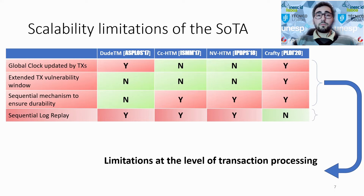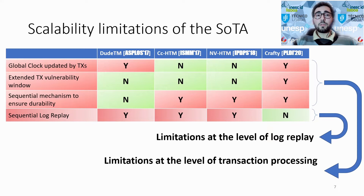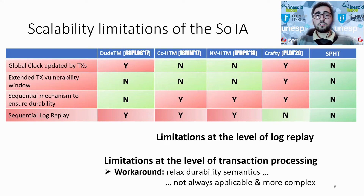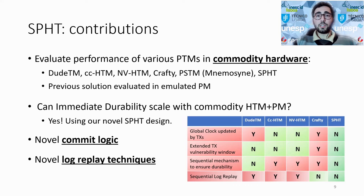As for the replay, most existing solutions rely on sequential approaches, making poor use of the abundance of hardware resources available on modern machines. Those resources could instead be leveraged to reduce the recovery costs with direct benefits on the system's availability. Relaxed models allow transactions to not be immediately durable, but they are at odds with the commonly understood semantics of transactions. SPHT solves all the mentioned limitations, focusing on scalability without compromising durability. This work evaluates SPHT and five other solutions for HTM plus PM in commodity hardware, and to the best of our knowledge, all previous works emulate PM.